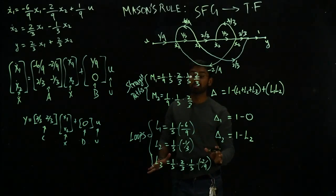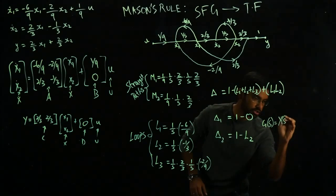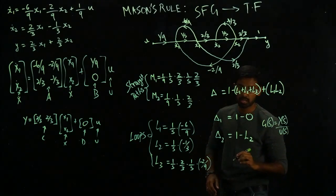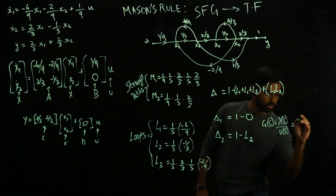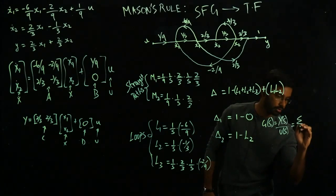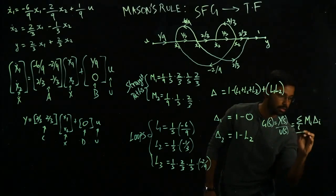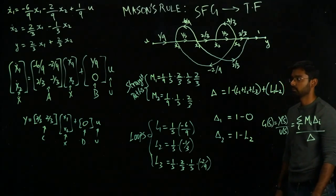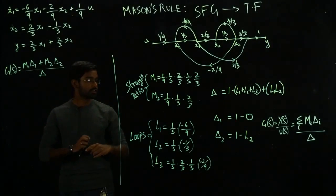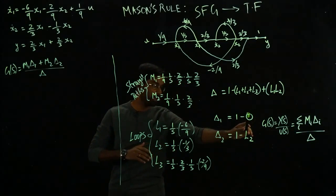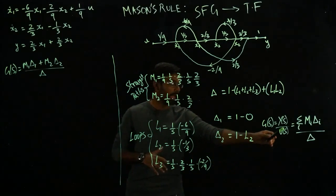Now, Mason's rule makes it really simple for us. It says, I'm going to call it g of s, which is my transfer function. Obviously, transfer function is in Laplace domain, the ratio of output over input is simply my summation over i, Mi times del i divided by delta. So this guy is going to give me the final transfer function. So we have shown that this is the Mason's rule in terms of these constituents, which I've defined here, these variables, and we're going to get the transfer function.